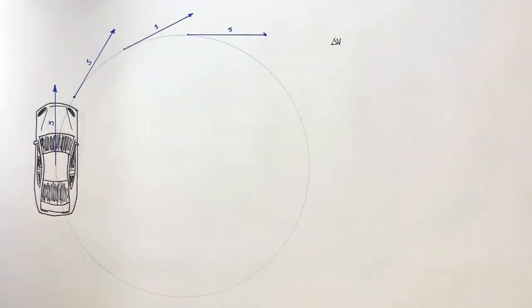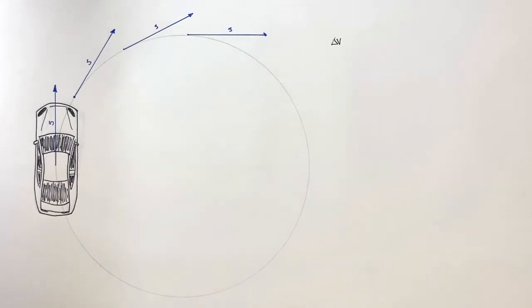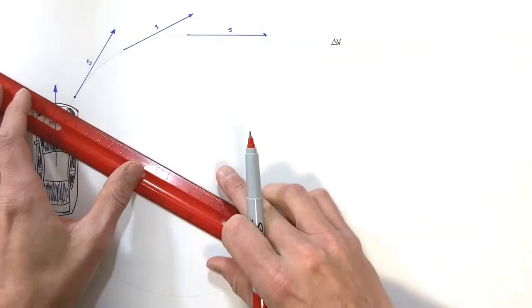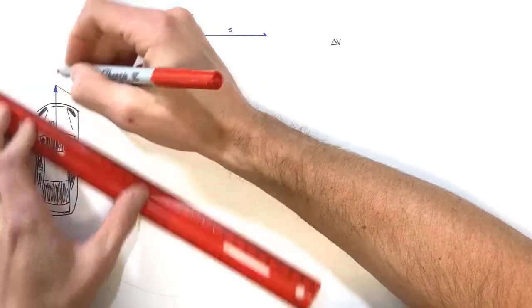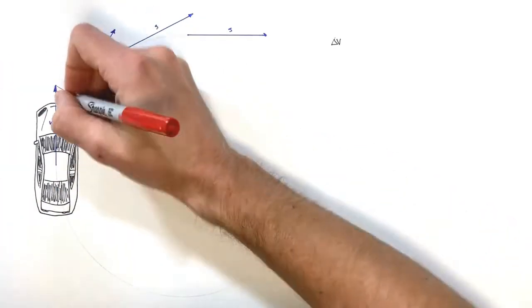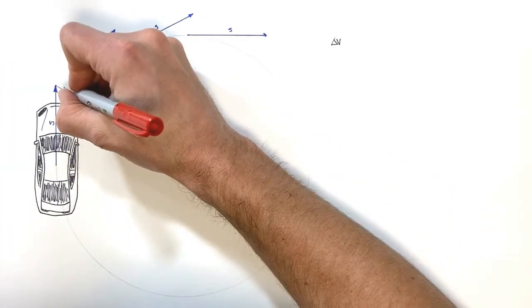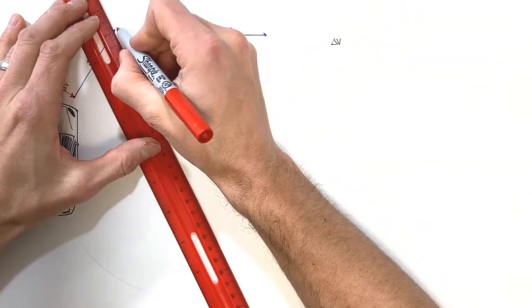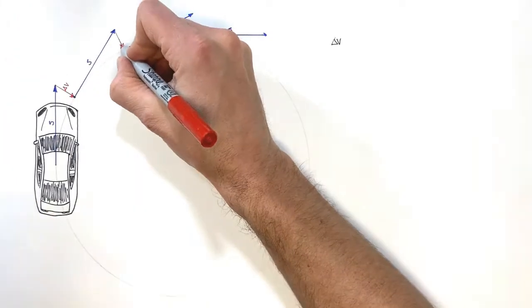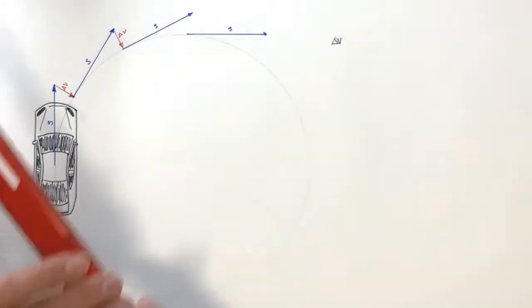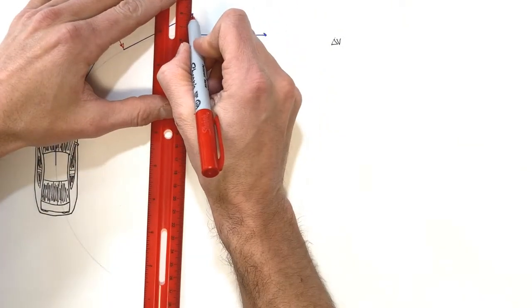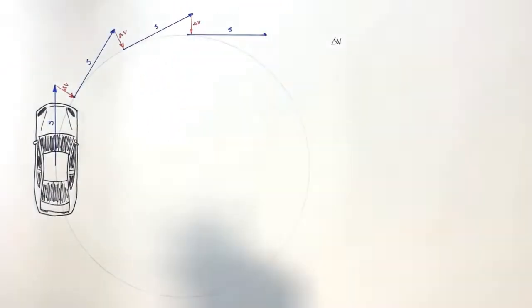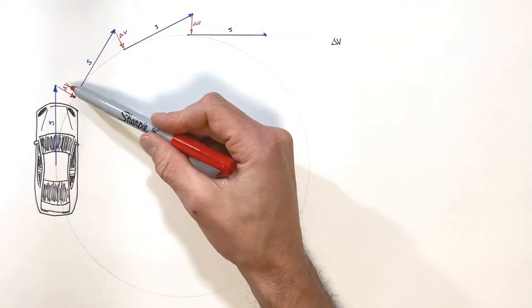Let's show that graphically. If you look at this, the car is moving forward and a little while later it's moving in this direction, and so the difference between those two is what we would say is a change in velocity. A little while later it's going yet a different direction — again a change in velocity — and again a little while later we see another change in velocity.